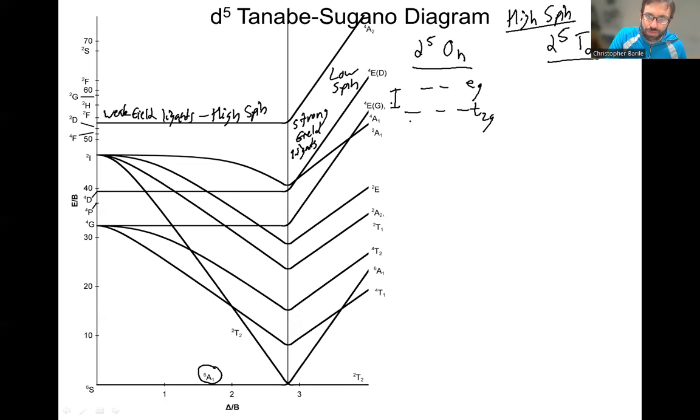We have the crystal field splitting diagram of octahedral: we have three T2Gs and we have two EGs, and we have a relatively weak field ligand, which means we have relatively low delta O.